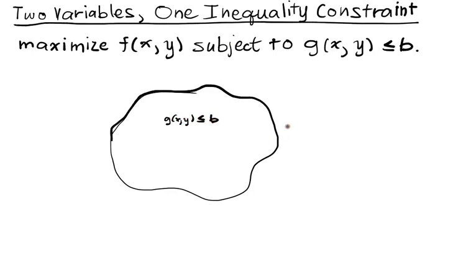There are basically two kinds of situations that can occur. The first situation is you have a maximum on the boundary of that set — that is, you have a maximum where g(x*, y*) is actually equal to b. And so that constraint is what's called binding.